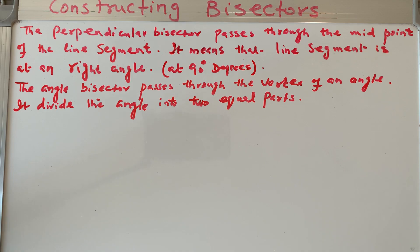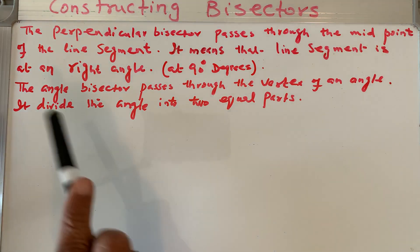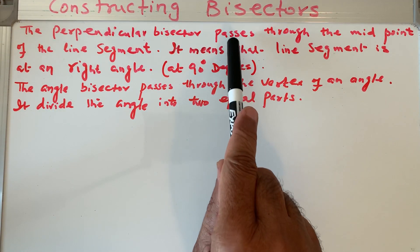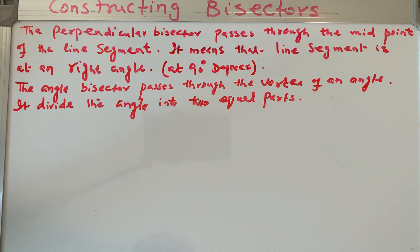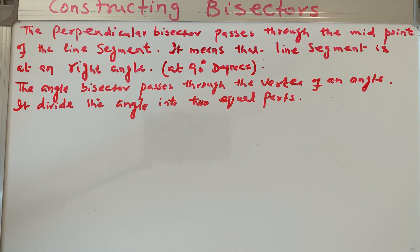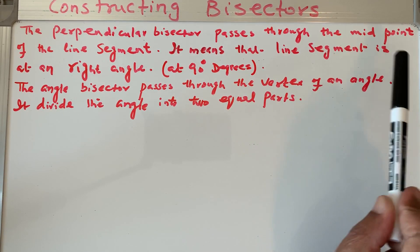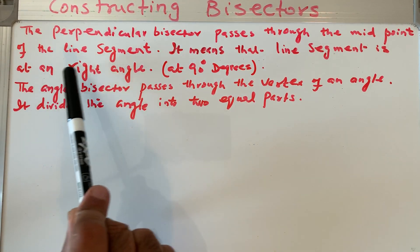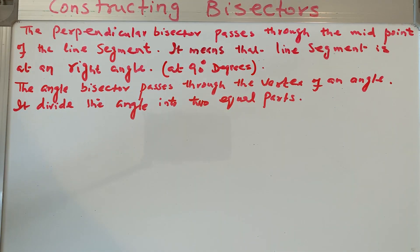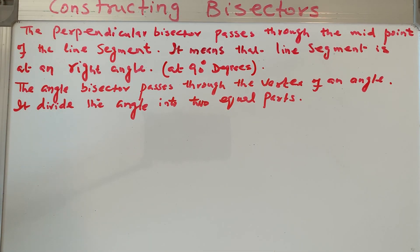Now I have two definitions here. The perpendicular bisector passes through the midpoint of the line segment. That means the line segment is at a right angle — right angle means 90 degrees.